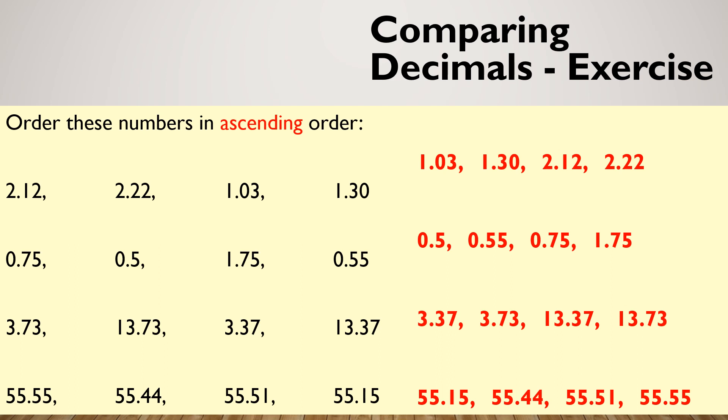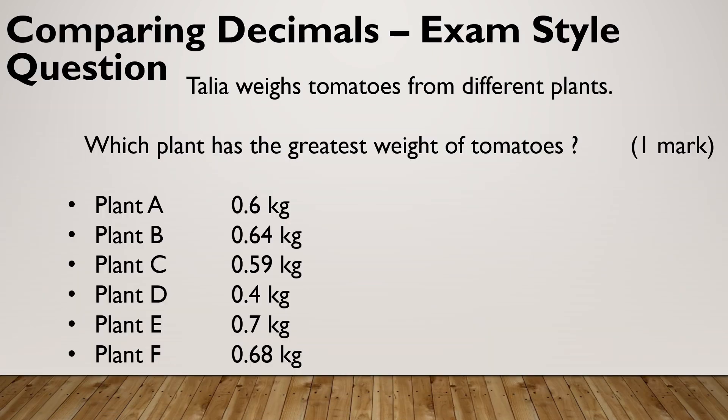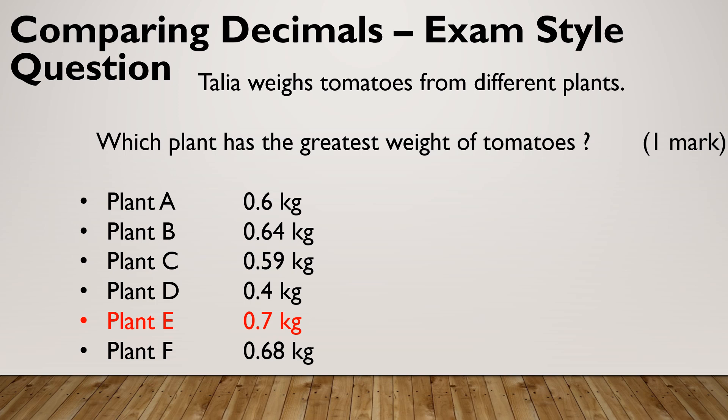Let's see what this might look like in an exam situation. Here's a one mark question from entry three. Talia weighs tomatoes from different plants. Which plant has the greatest weight of tomatoes? So pause the video, have a go, give it a go. Hopefully you chose plant E. Plant E was 0.7. So you could have added your zeros. 0.60, 0.40, 0.70. Now we can see that 0.70 is the biggest. They're all a zero. Then if I look, 6 6 5 4 7. So I can see that this is the biggest.